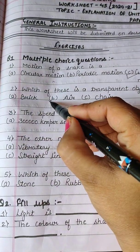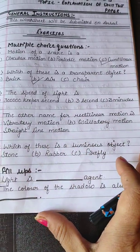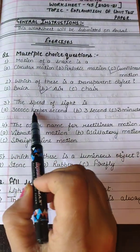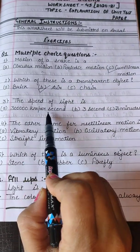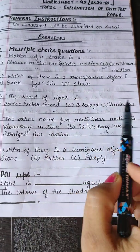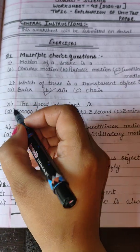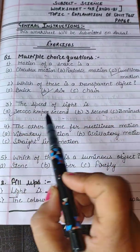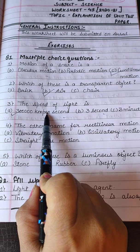The next question is: the speed of light is three lakh kilometers per second, three seconds, or three minutes? The correct answer is three lakh kilometers per second.